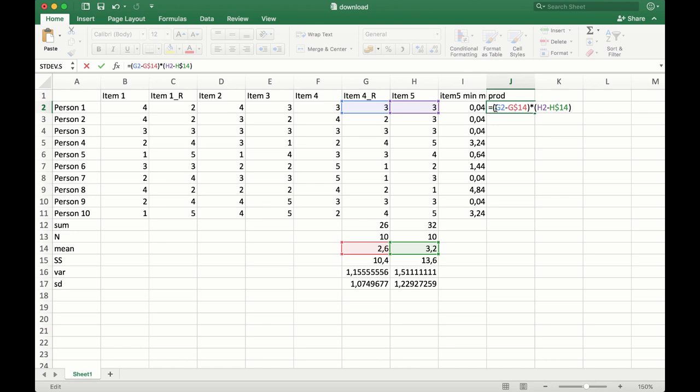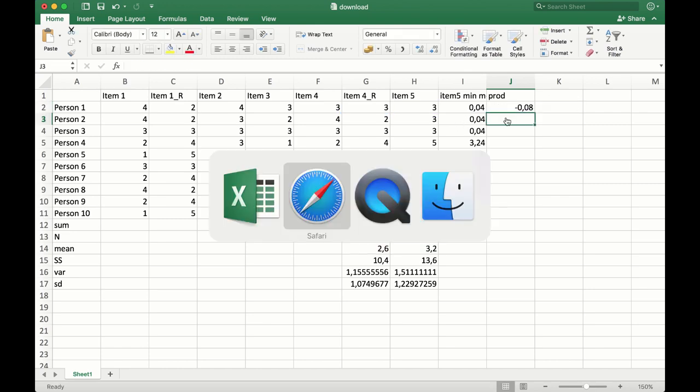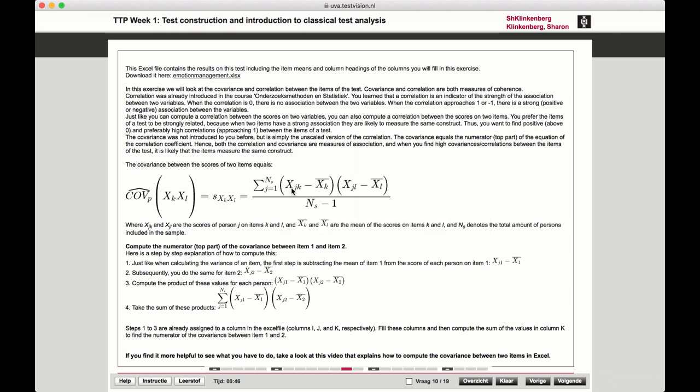So that is the product, the multiplication. I think we're done with that. The score minus the mean, the score minus the mean, multiplied.